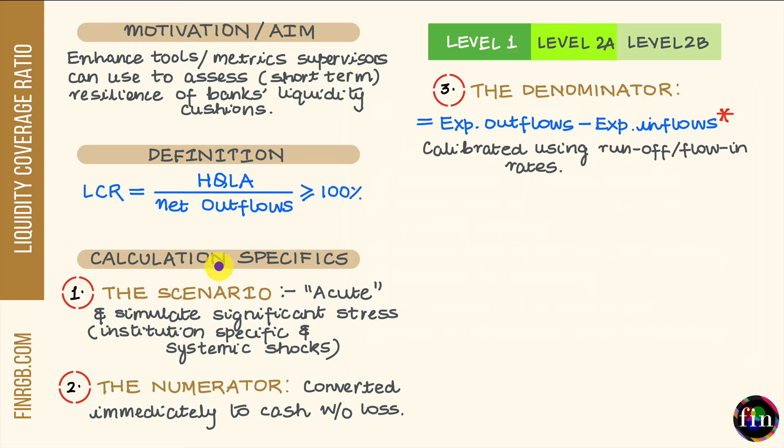Number one, these assets are inherently low risk in nature. Number two, these assets have an ease and certainty around their valuation. Number three, these assets trade on big and developed exchanges. And number four, these assets have a low correlation with other risky assets.